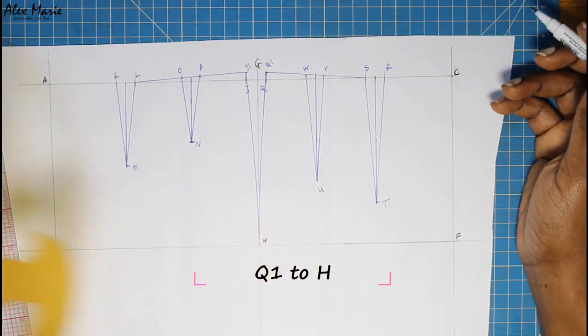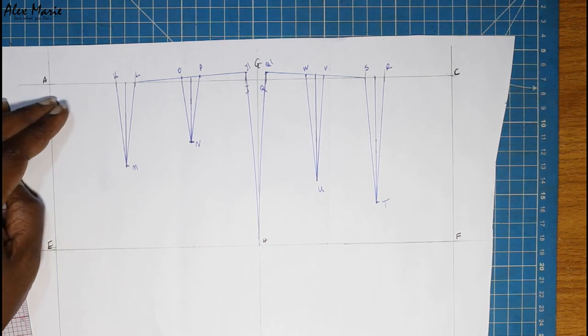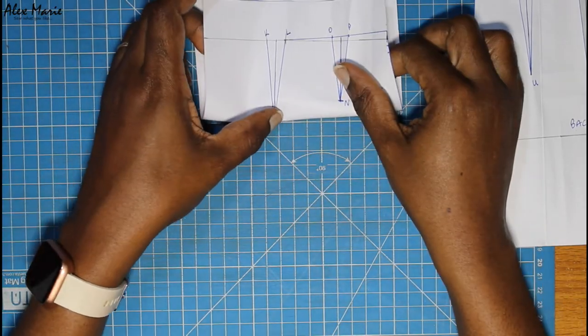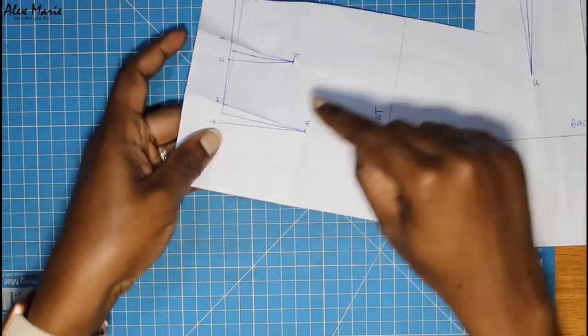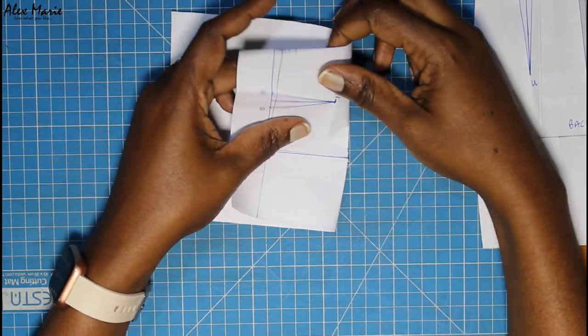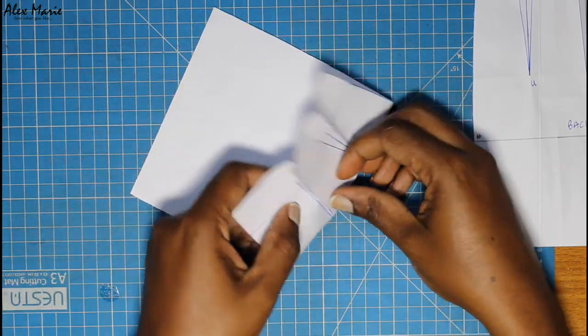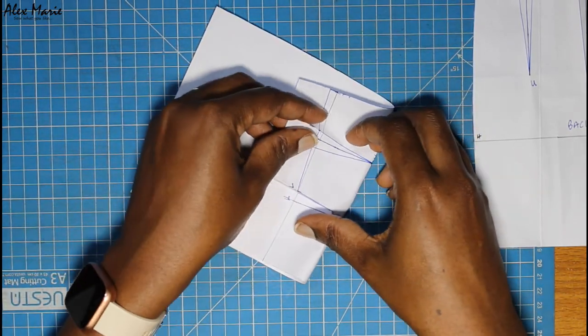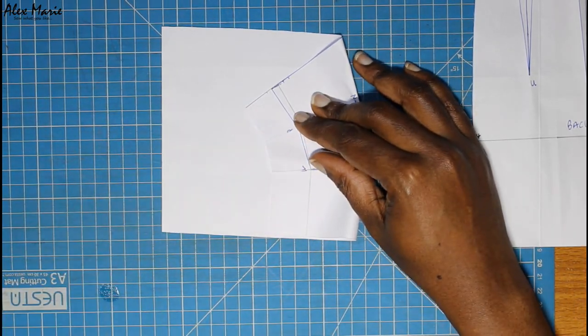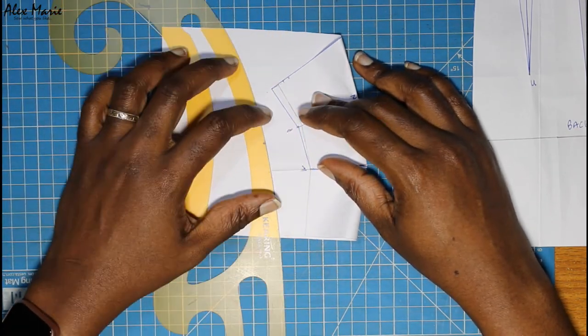And we are done with our eight-dart skirt. We're going to true it. Same as before, just fold and close up both your darts.